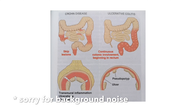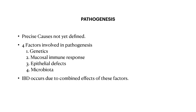As you can see in the figure, Crohn's disease shows skip lesions while ulcerative colitis shows continuous colonic involvement beginning in the rectum. Crohn's disease shows transmural inflammation, whereas ulcerative colitis affects only the mucosa and submucosal layers of the GIT.